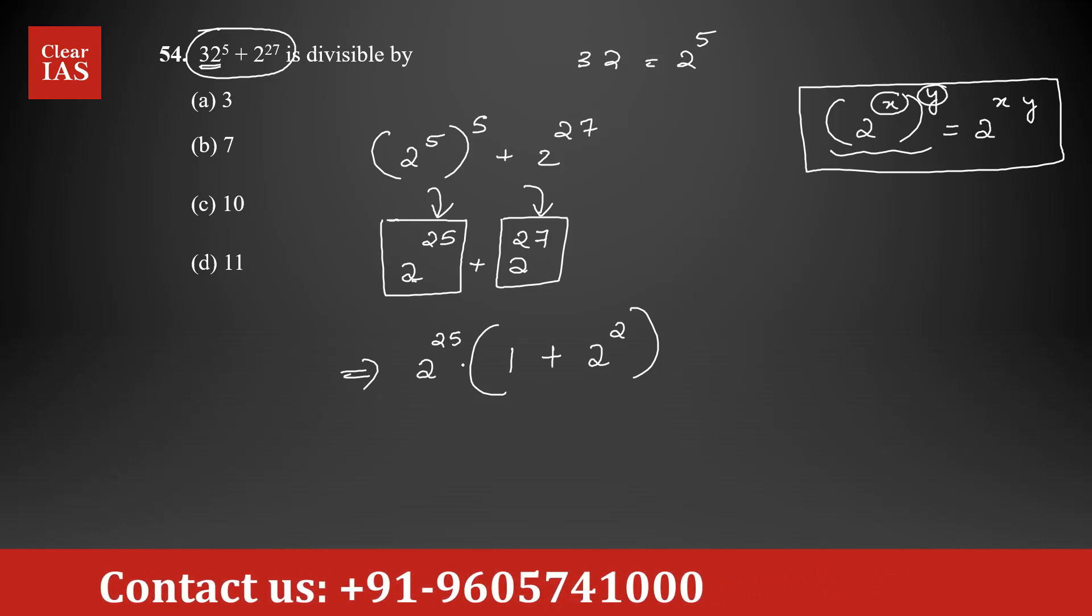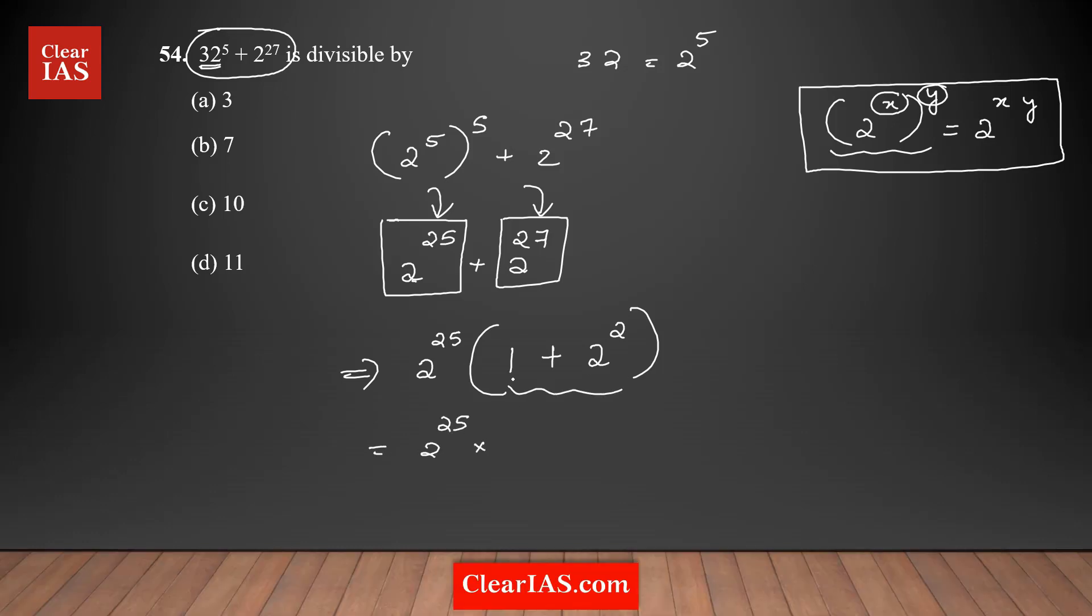Next step: 2^25 times—I'm just combining them—2 squared is 4, 4 plus 1 is 5. This is the simplified form in prime factorization: the term given in the question can be simplified as 2^25 × 5.